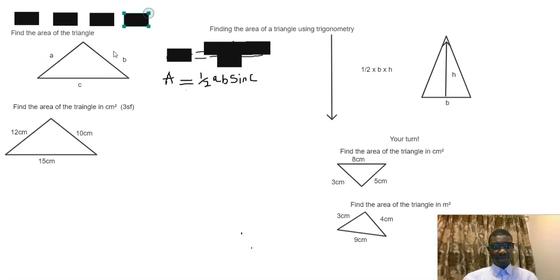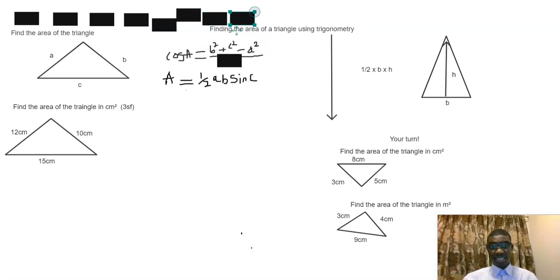Now because we have three sides, it's going to be cosine. The right equation would be cos A = (b² + c² - a²) / 2bc.